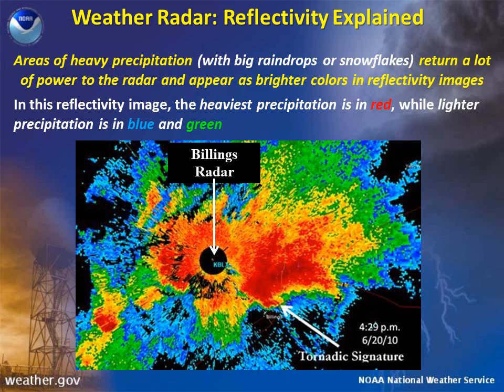As we can see, the storm east of the radar is hook shaped, indicating that it is very well organized and likely contains some rotation — the precursor to a tornado. In this case, the storm did produce a tornado, so the hook shape here was a tornadic signature.